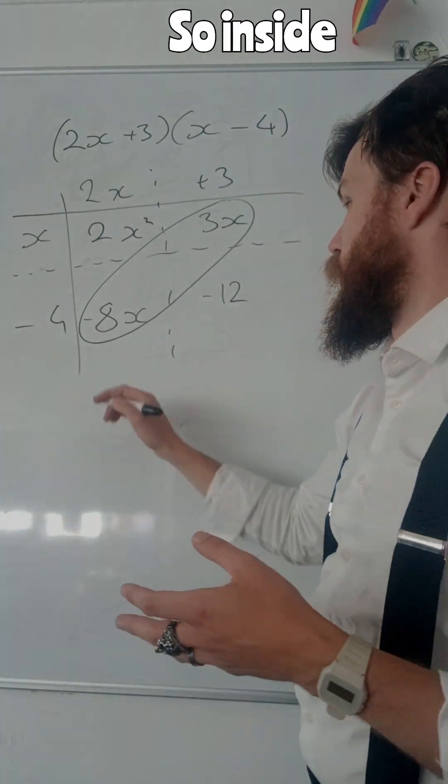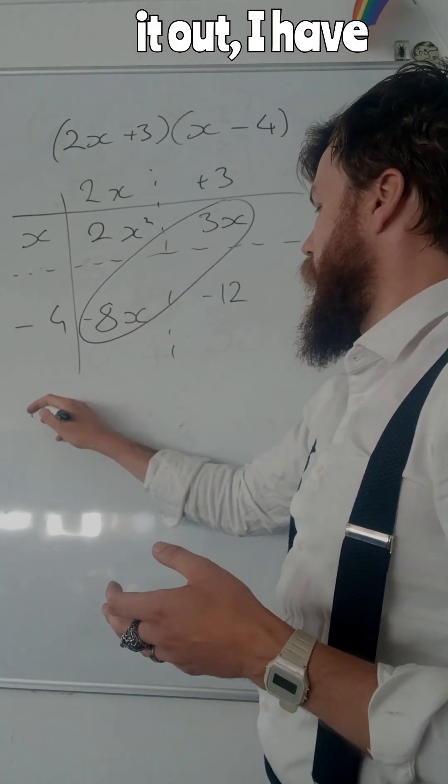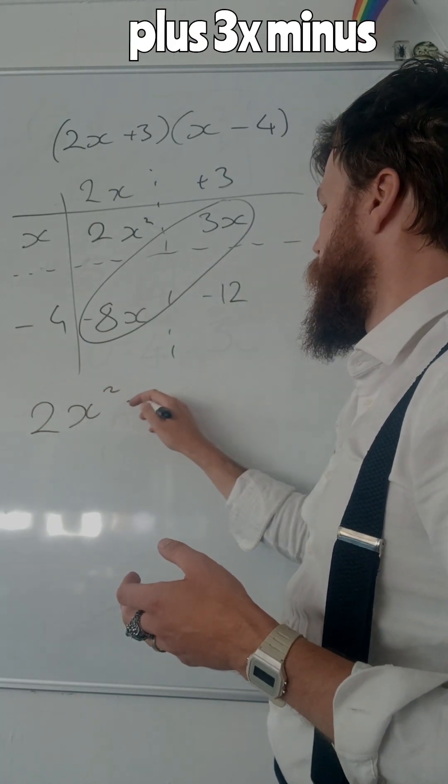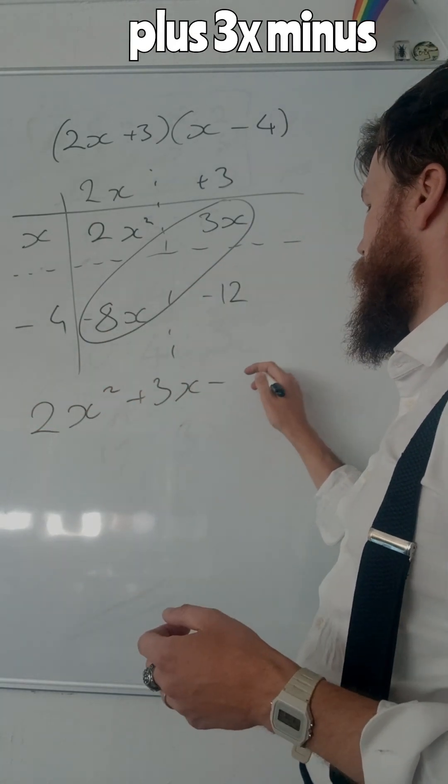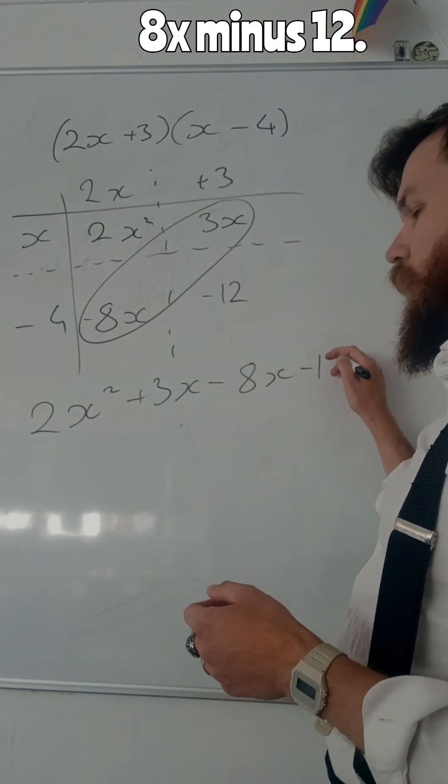For the sake of this, I'm going to write it out in full. So inside this, multiplied out, I have 2x squared plus 3x minus 8x minus 12.